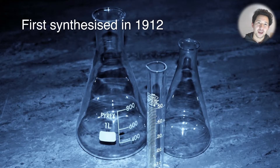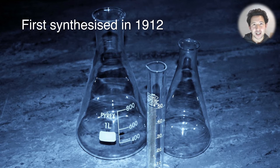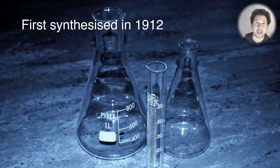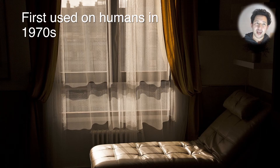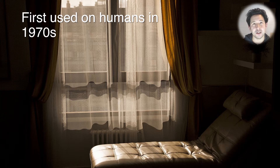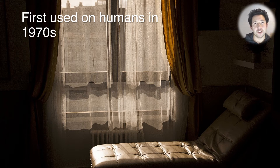MDMA was first synthesized in 1912 by Merck, the big German drug company. They were actually trying to make something called hydrastinine, which was used to stop bleeding — nothing to do with partying and nothing to do with weight loss, which is another common rumor. It was first used on humans sometime in the 70s and was mainly used in the context of psychotherapy, and then shortly after it started appearing on the streets and being used at raves and discos.